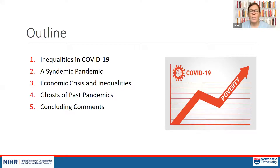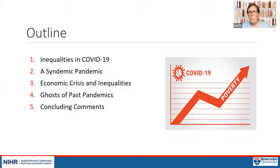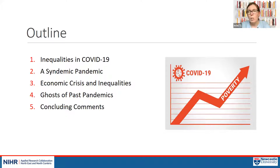I'm going to talk about some of the data appearing from ONS and other sources outlining the inequalities in COVID-19 both within the UK context and some international data as well. I'll then talk about why this might be happening and introduce the idea of a syndemic pandemic, and how COVID-19 is interacting with other inequalities — specifically how the economic crisis could lead to other health inequalities in the near to medium term future.